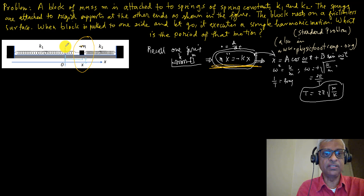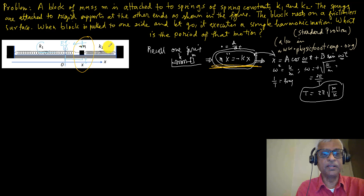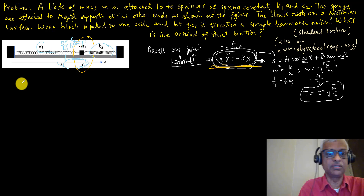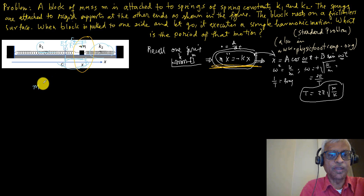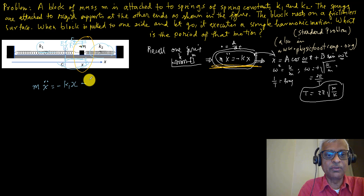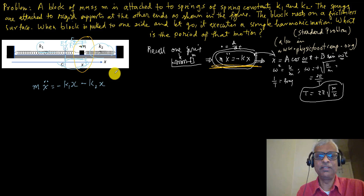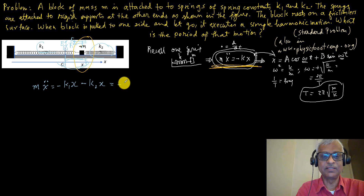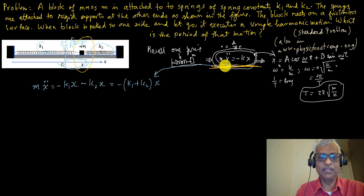You can see that spring k1 is stretched — that's where the equilibrium is. The force from this spring acts in the negative direction. The other spring k2 is compressed by the same amount x, so its force also acts in the negative direction. Both f1 and f2 point the same way, so m·x-double-dot = −k1·x − k2·x.